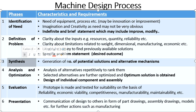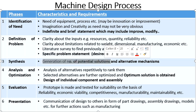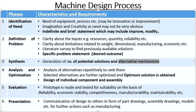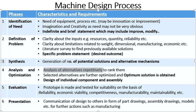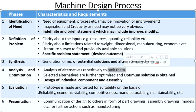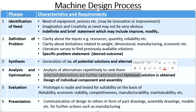The next stage is synthesis, where the work involves generation of a number of potential solutions and alternative mechanisms. We have to develop as many alternative mechanisms as possible in this stage. The next stage is analysis and optimization. Whatever number of solutions and mechanisms were developed in the previous stage, we have to analyze all those alternatives repetitively so that we can find out the best, second best, and third best solutions. The selected alternatives are further optimized and an optimum solution is obtained.